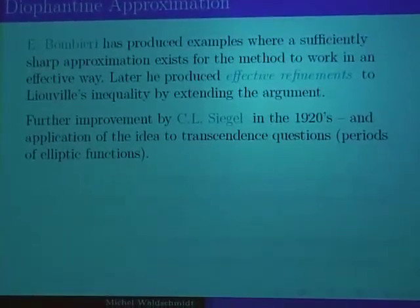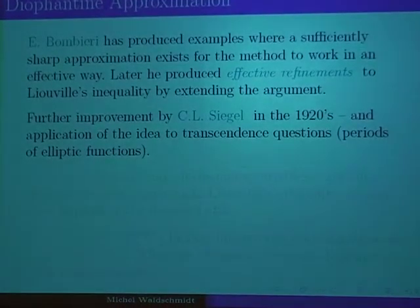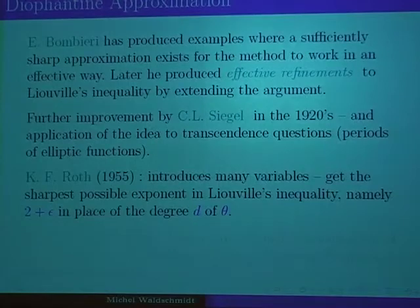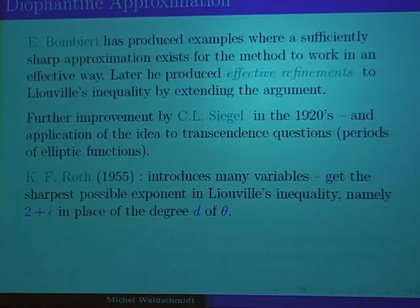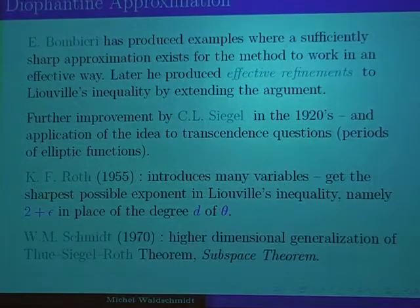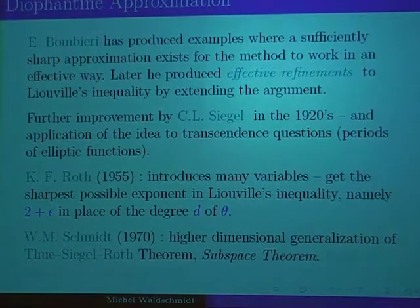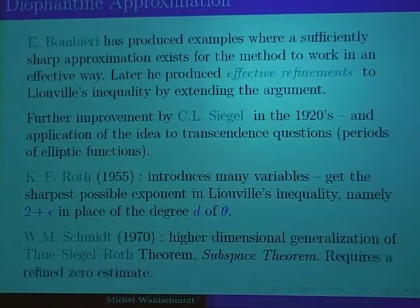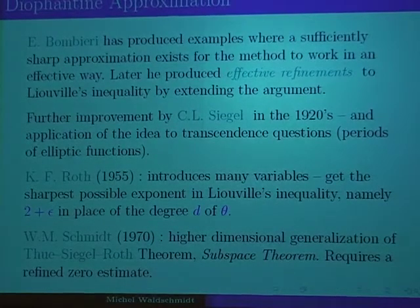Siegel improved Thue's results and gave applications of auxiliary function construction to transcendence questions, including periods of elliptic functions. The work of Thue and Siegel was developed by many mathematicians, including Dyson, Gelfond, and Schneider, until Roth in 1955 obtained the best possible exponent in Liouville's inequality: 2 + ε in place of the degree. Wolfgang Schmidt then proved a higher-dimensional generalization — the Subspace Theorem — and one of the main difficulties is, again, the zero estimate, which becomes harder with each advance in the theory.